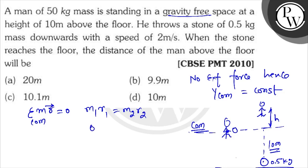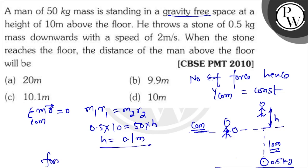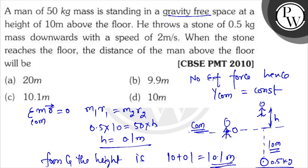So, M1 is 0.5 kg, R1 is 10 meters. This equals M2 which is 50 kg, and R2 is what we need to find. So R2 comes out to 0.1 meter. Therefore, from the ground, the height is 10 plus 0.1, which equals 10.1 meters. The answer is C.